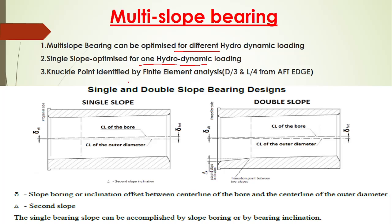The knuckle point is identified at this transition point between the two slopes. It is identified as D/3 in diameter and L/4 in length from the aft edge. So from the aft edge, the knuckle point is located at L/4 length and D/3 diameter, from which the transition of the slope is provided. That is how the multi-slope bearing differs from the single-slope — the multi-slope can be optimized for different hydrodynamic load conditions, whereas the single-slope can only be optimized for one.